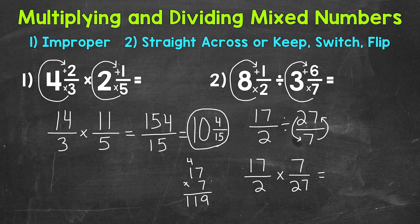So 119 is our numerator, and then 2 times 27 is 54. So we get 119 50 fourths, or 119 over 54.